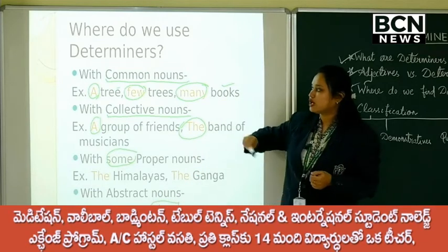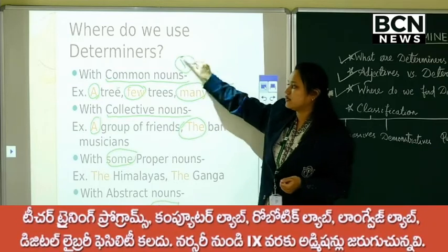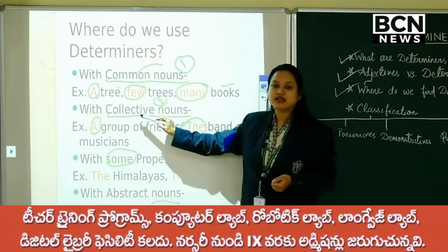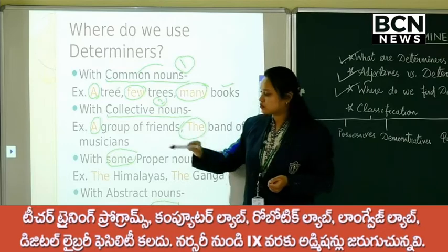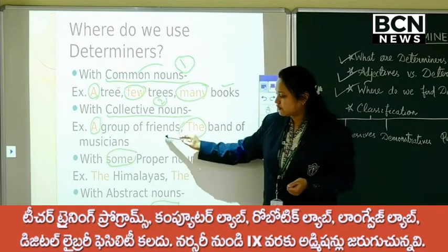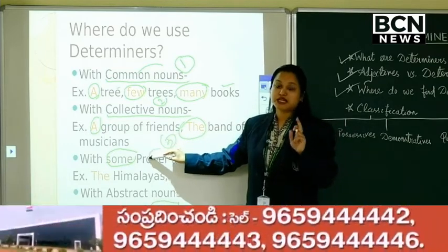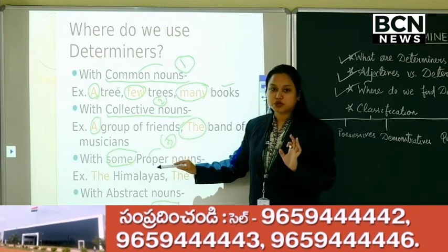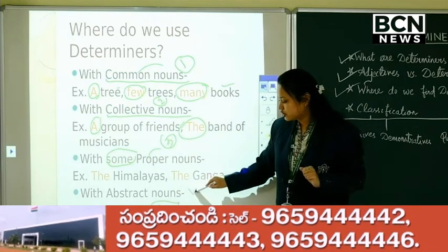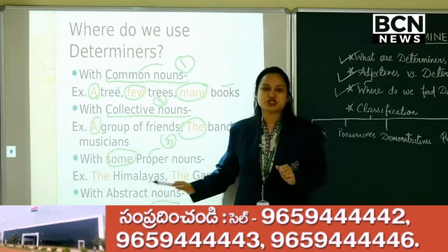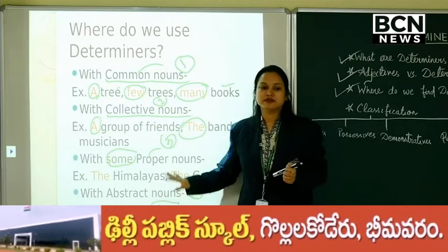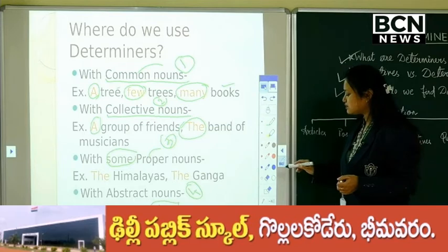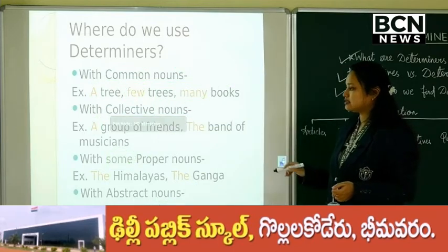So what type of nouns do we use determiners with? First, common nouns. Second, collective nouns. Third, some proper nouns — not all, but some. And fourth, abstract nouns. These are the four types of nouns with which we use determiners.